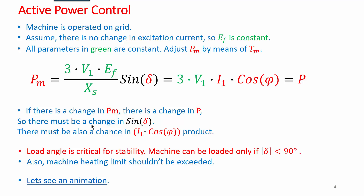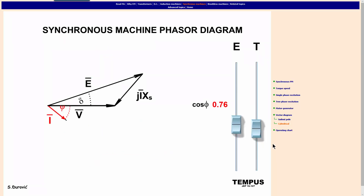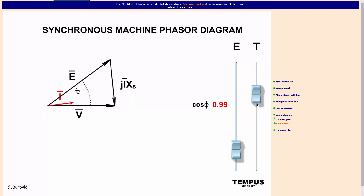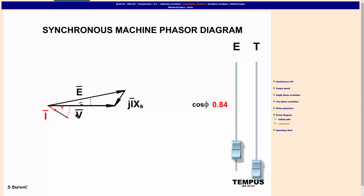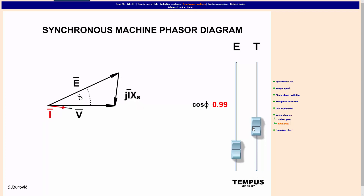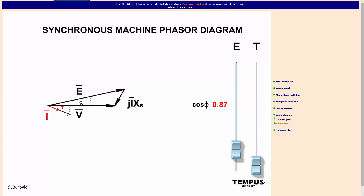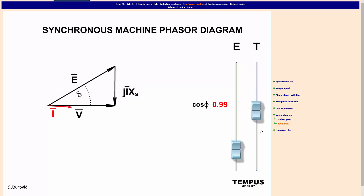To understand active power control, let's examine the animation. EMF is constant, and we change applied mechanical power by means of torque. When torque is increased, applied shaft power increases and δ increases — the machine can be loaded up to 90 degrees. Another parameter that changes is current, especially the cosine component. As applied torque increases, current magnitude increases and the cosine component of the current increases, meaning there is an active power increase at the terminal. We are adjusting terminal power through torque adjustment.